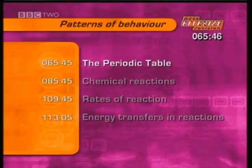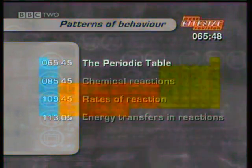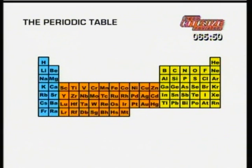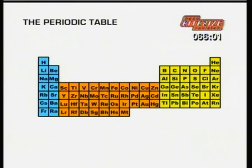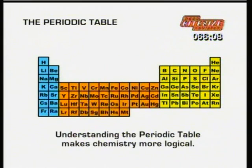First, the periodic table. The periodic table is a table of all the known elements, organised according to their properties and their atomic structure. The periodic table shows each element by its chemical symbol. Understanding the periodic table and the information it contains will help make chemistry more logical. This next clip explains some of the patterns using a reduced form of the periodic table.